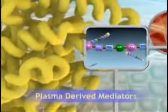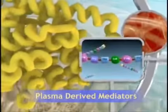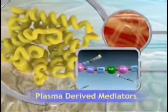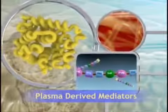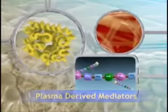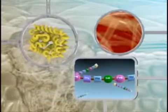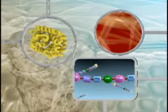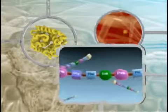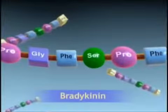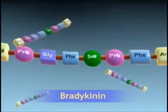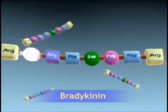The three major plasma-derived mediators are present in the plasma in precursor forms that must be activated, usually by a series of proteolytic enzymes. The kinins increase capillary permeability and stimulate pain receptors.